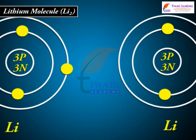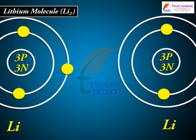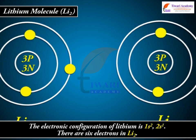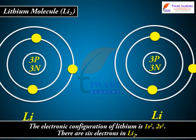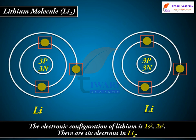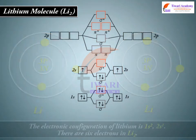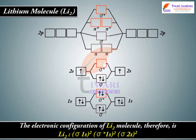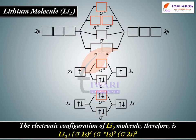2. Lithium molecule Li2. The electronic configuration of lithium is 1s2, 2s1. There are 6 electrons in Li2. The electronic configuration of Li2 molecule therefore is sigma 1s2, sigma star 1s2, sigma 2s2.